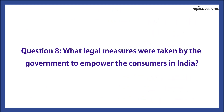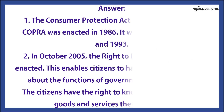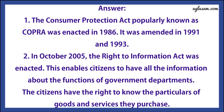Question number 8 says: What legal measures were taken by the government to empower the consumer in India? Answer is: First, the Consumer Protection Act, popularly known as COPRA, was enacted in 1986. It was amended in 1991 and 1993. Second, in October 2005, the Right to Information Act was enacted. This enables citizens to have all the information about the functions of government departments. The citizens have a right to know the particulars of goods and services they purchase.